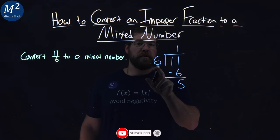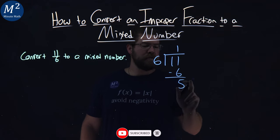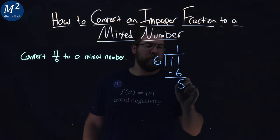What we have here is 6 is our divisor, 1 is the quotient, and 5 is our remainder.